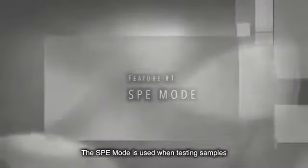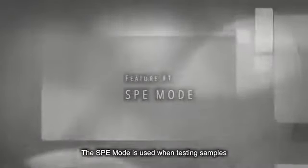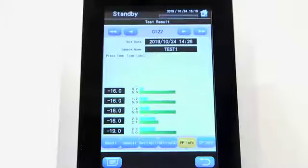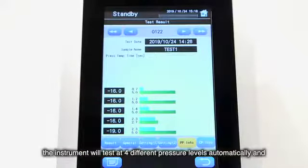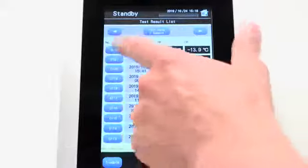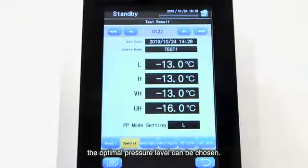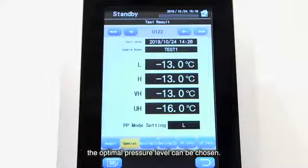The SPE mode is used when testing samples which the optimal pressure for testing pour point is unknown. When using this mode, the instrument will test at four different pressure levels automatically and give four results. By comparing the four results with the referee result, the optimal pressure level can be chosen.